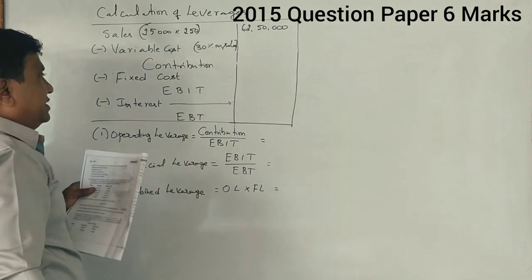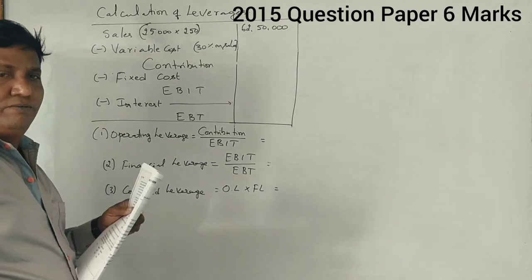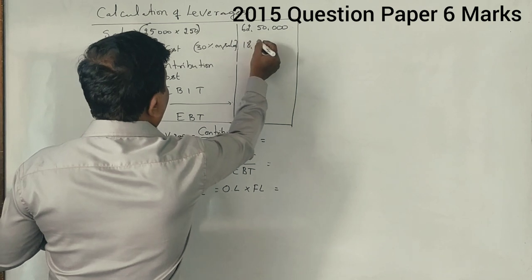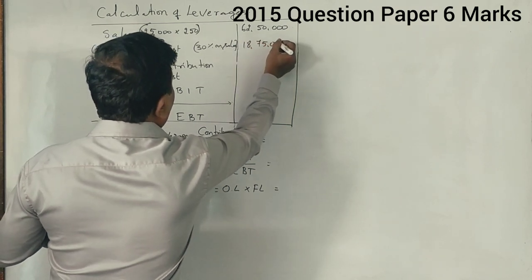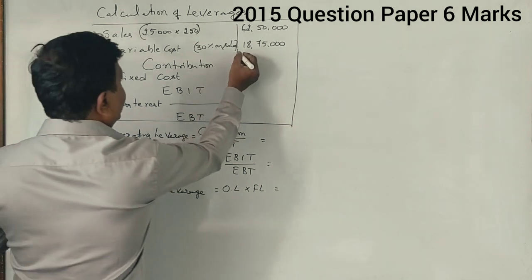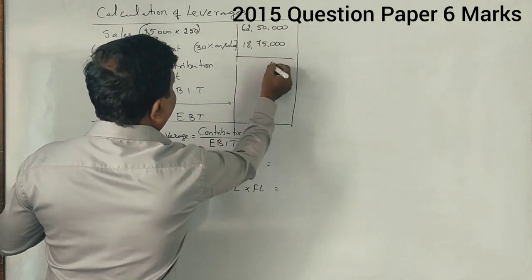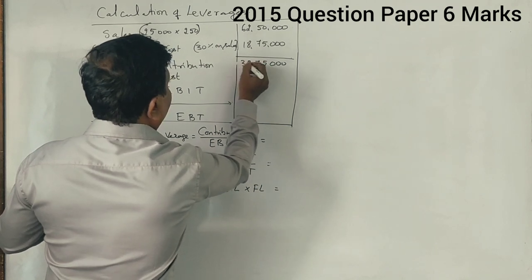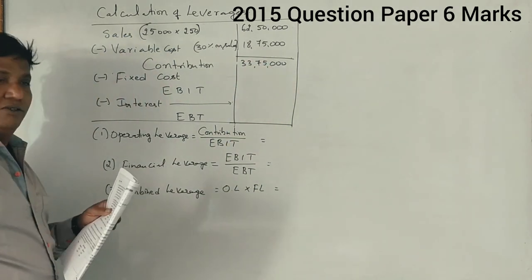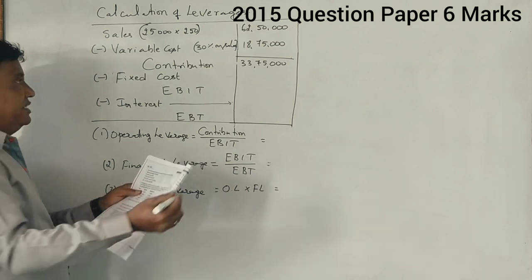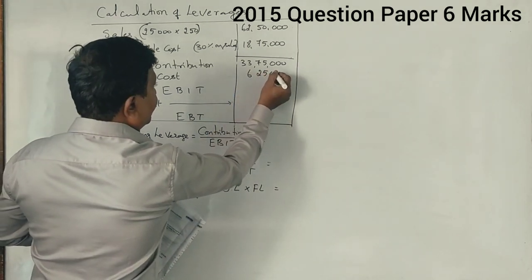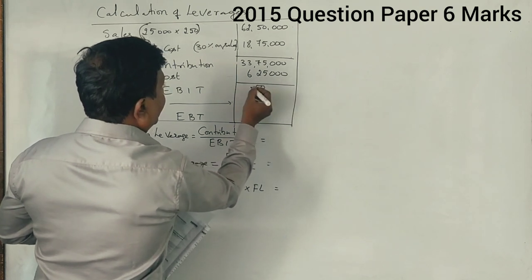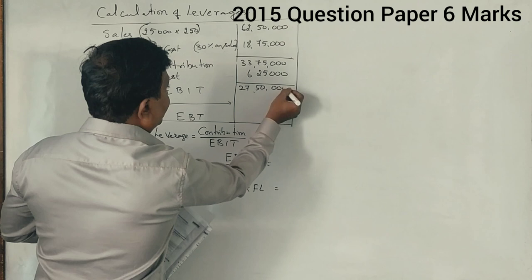What is 30% on sales? 18,75,000. Correct? Now, what is the contribution you will get? 33,75,000. And here fixed cost is 6,25,000. What is the EBIT you will get? 27,50,000.